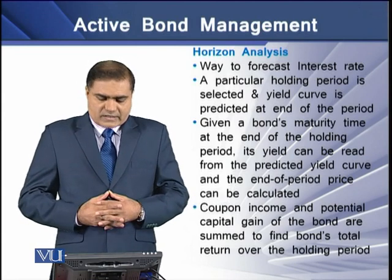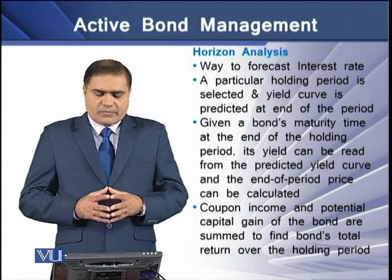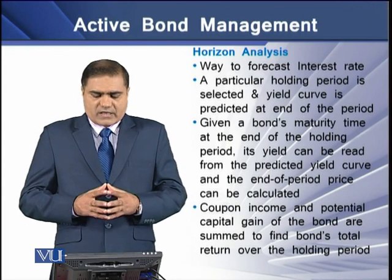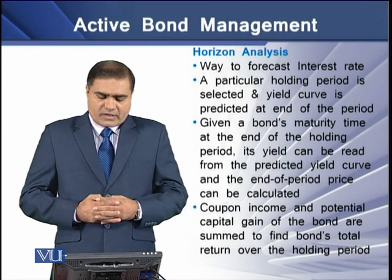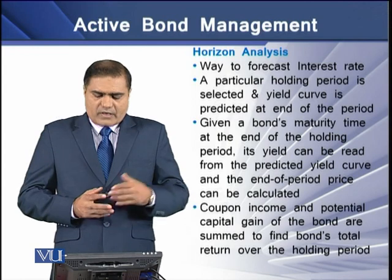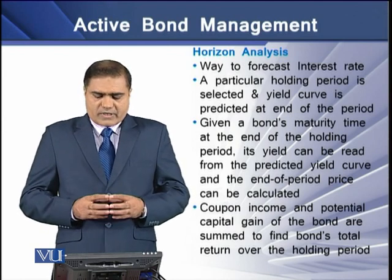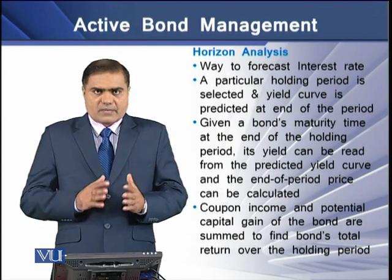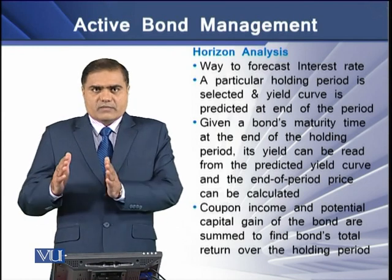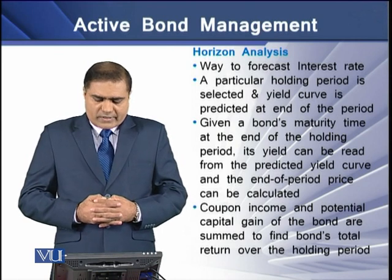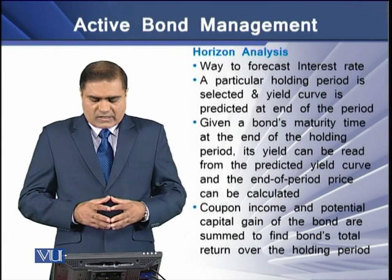Next is horizon analysis, a way to forecast interest rates where a particular holding period is selected and the yield curve is predicted at the end of that period. Given a bond's maturity at the end of the holding period, its yield can be read from the predicted yield curve, and the end-of-period price can be calculated. Coupon income and potential capital gain are then summed up to find the bond's total return over the holding period.